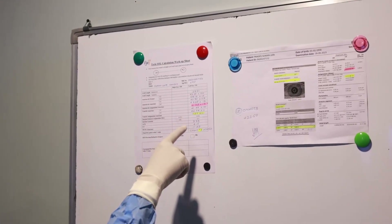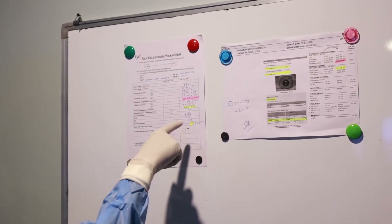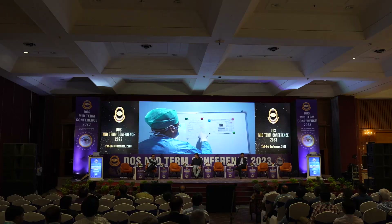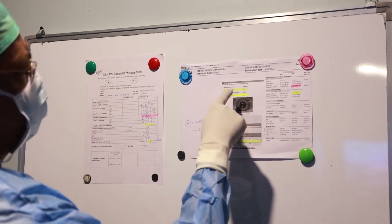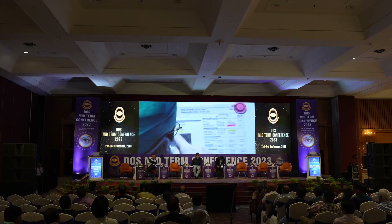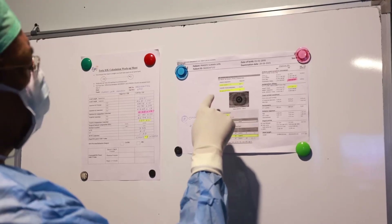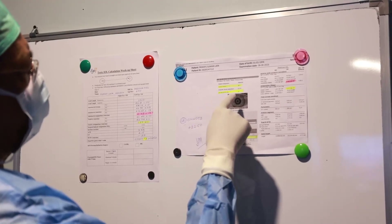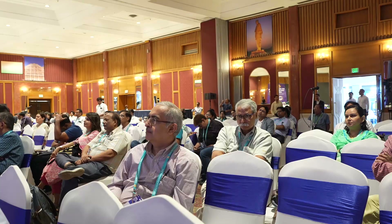The IOL power is T3, the cylinder correction is T3, and the lens is 22.5. The incision location as per me is 20. I am using a surgical induced astigmatism of 0.2 and the IOL will finally be placed at an axis of 5 degrees. So let's get going.